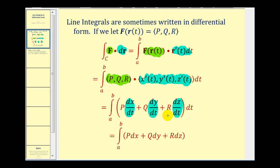We can see that when we integrate this with respect to t, these dt's would simplify out, leaving us with the differential form of a line integral. We have the integral from a to b of p dx plus q dy plus r dz.